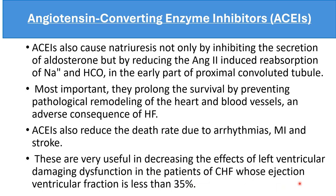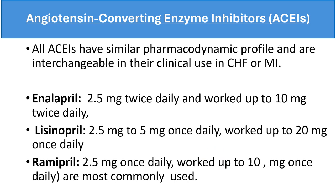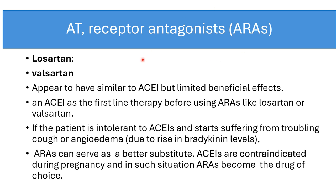In patients with CHF whose ejection fraction is less than 35%, all ACE inhibitors have similar pharmacodynamic profiles and are interchangeable in clinical use. Enalapril, lisinopril, and ramipril are dosed at approximately 2.5 to 10 mg. Angiotensin receptor blockers such as losartan and valsartan appear to have similar but limited beneficial effects compared to ACE inhibitors. ACE inhibitors remain first-line therapy, but in patients intolerant to ACE inhibitors who suffer from troubling cough or angioedema due to elevated bradykinin levels, angiotensin receptor blockers are a better substitute. ACE inhibitors are contraindicated during pregnancy, where angiotensin receptor blockers are the drug of choice.